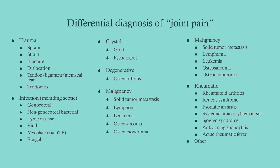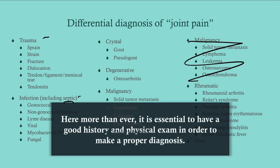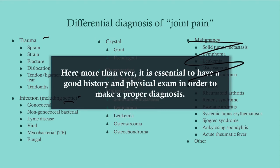This is your differential for joint pain. It can be traumatic. You can get an infection — that includes septic arthritis, gonococcal, non-gonococcal, Lyme disease; it can even be caused by viruses, mycobacterium, or fungal joint infections. Some of the more exotic ones are more the domain of the immunocompromised. Then there are the crystalline arthropathies — gout and pseudogout — degenerative arthropathies like osteoarthritis, malignancies which usually cause referred pain, and the rheumatic diseases. Here more than ever, it is essential to have a good history and physical exam in order to make a proper diagnosis or at least narrow down your differential.